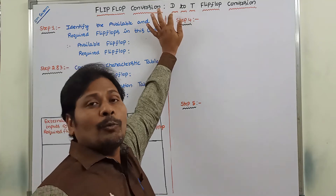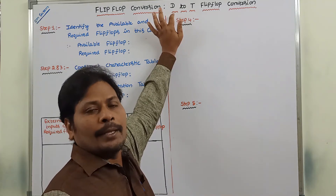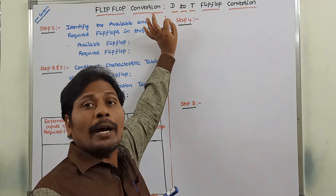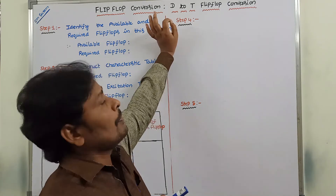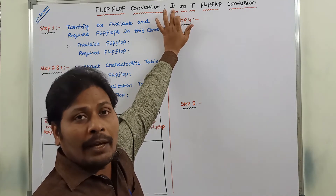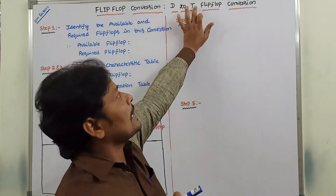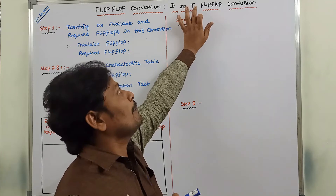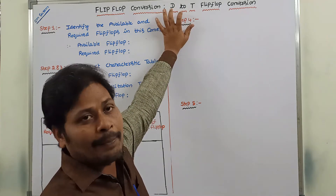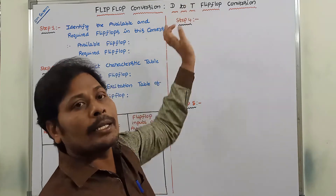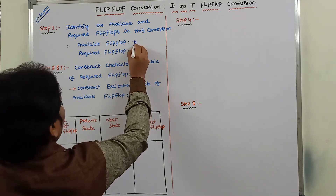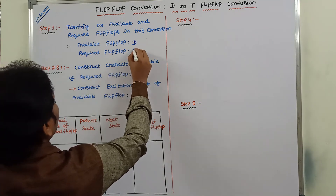To convert D flip-flop to T flip-flop, we have to follow five steps. The first step is to identify the available flip-flop and required flip-flop from the given problem. Whatever flip-flop we are given, that is called the available flip-flop. Whatever the desired flip-flop given in the problem, that is called the required flip-flop. So here the available flip-flop is D flip-flop and the required flip-flop is T flip-flop.